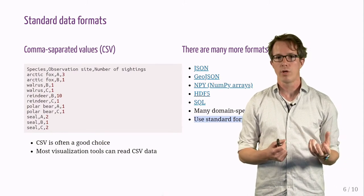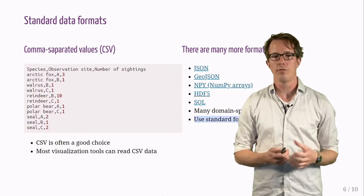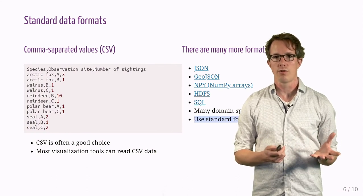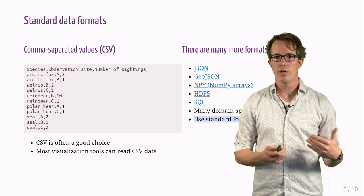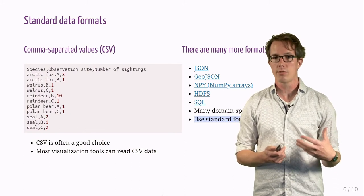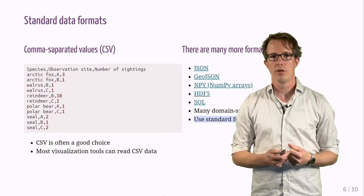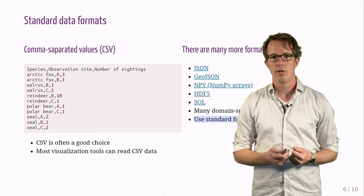One of the simplest ones is CSV, comma-separated values. The file consists of a header line and each value is separated by a comma. This is often a good choice. Most visualization tools can read CSV data.